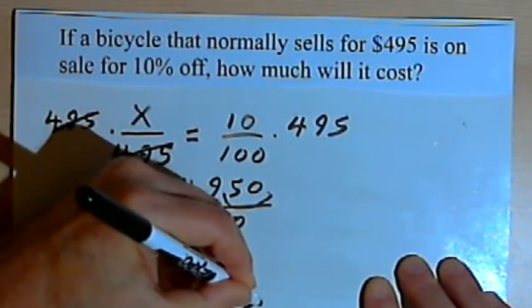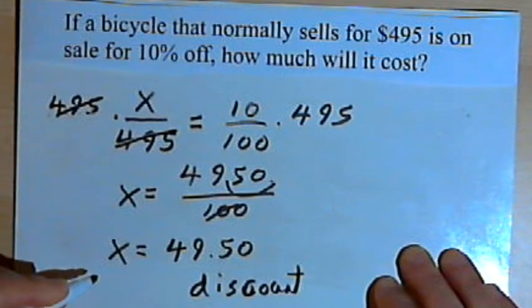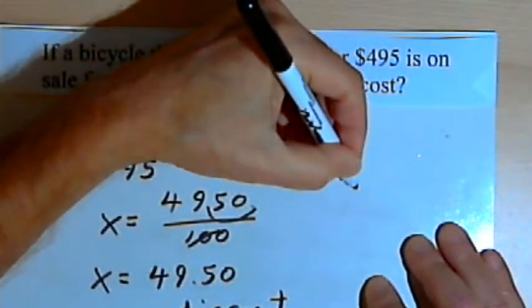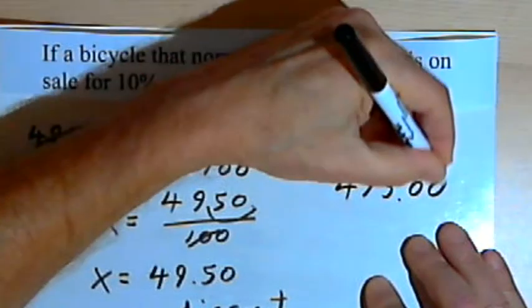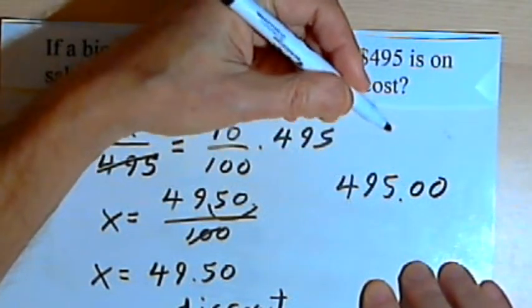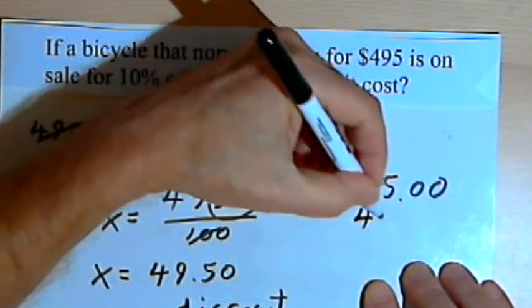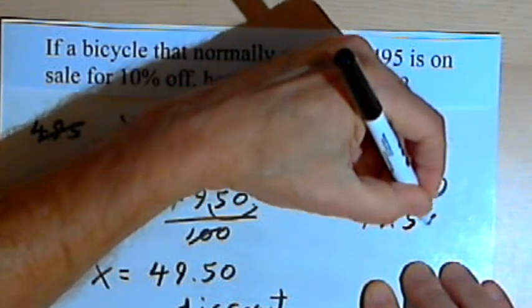Now what we want to do is subtract that number from the original price. The original price was $495, and the discount, the amount I'm subtracting, is $49.50.